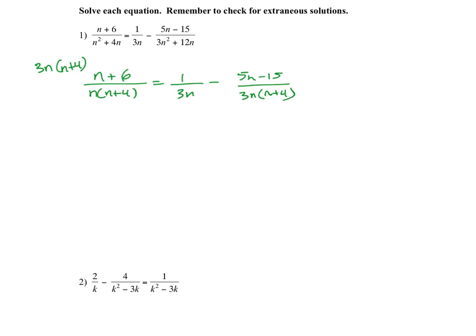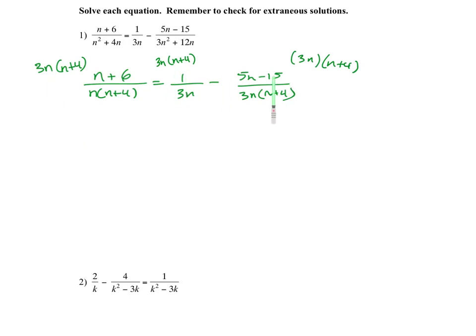So we're going to factor and find the greatest common factor, then multiply by whatever is common and whatever is not. So 3n times (n plus 4). On that first fraction, I'm going to multiply every fraction — everything on that equation — times that common denominator. So now I can cancel the n, I can cancel the (n plus 4), I can cancel the 3n, and here I can cancel everything.